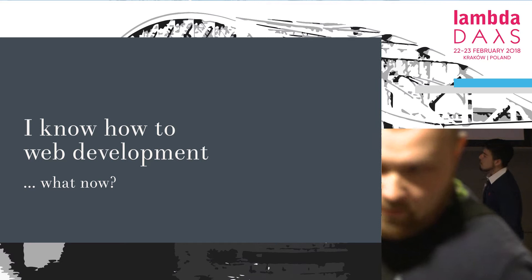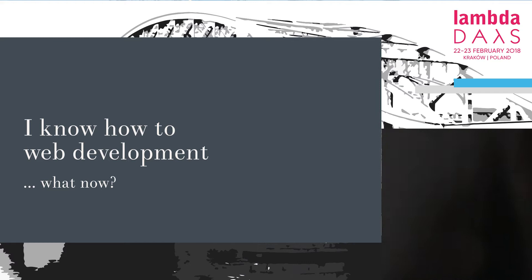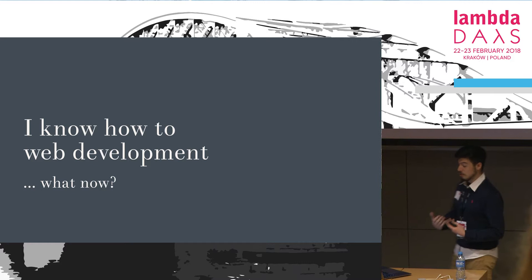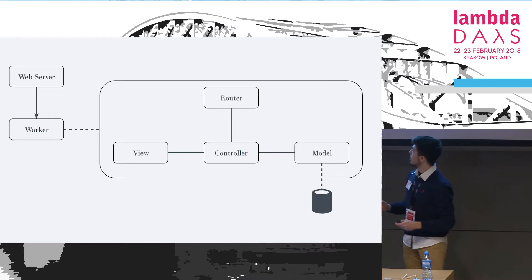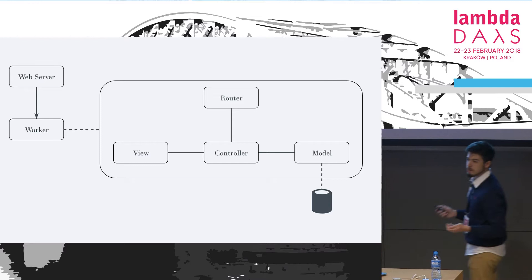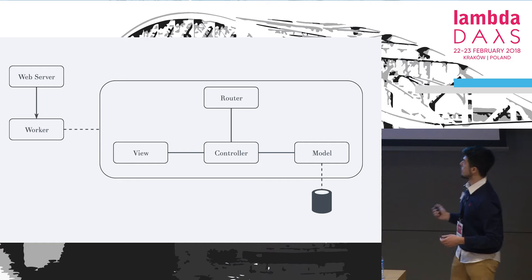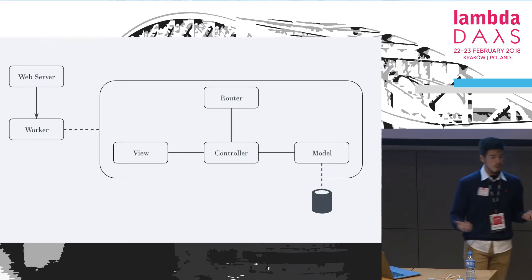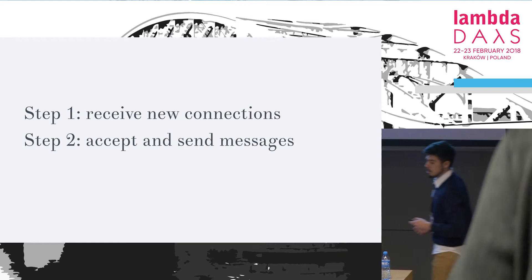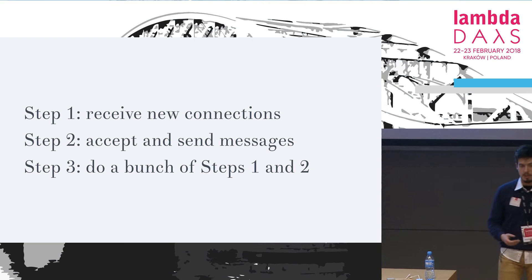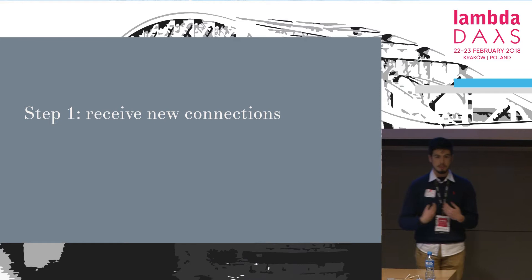If you're a web developer, how do you arrange a project? How do you build something you're not used to? My approach was to transition from web development to distributed systems. In essence, in web development you have a web server, and for each incoming request you spin up a worker, and that worker does whatever your framework tells you. Step one: receive new connections. Step two: process incoming messages and send replies. Then you just do this a bunch of times.